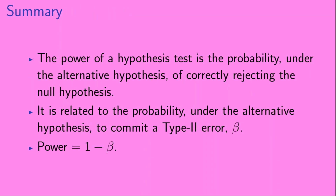To summarize: first, the power of a hypothesis test is the probability under the alternative hypothesis of correctly rejecting the null hypothesis. Second, it is related to beta — the probability under the alternative hypothesis of committing a type 2 error. And lastly, the power of the test is equal to 1 minus beta.